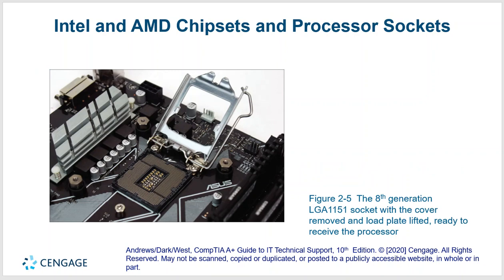Getting more into processor sockets — here's a socket and your processor sits on top of this. This is an LGA, which is a Land Grid Array. Basically all the pins are coming from the motherboard and you have a flat CPU that sits on top. A PGA — Pin Grid Array — is where the CPU has pins on it and you slot those pins into the motherboard. The issue with that is the pins can very easily bend. If you'd like an example, see me in class and I'd be happy to show you. Highly likely the PGA one will be bent.